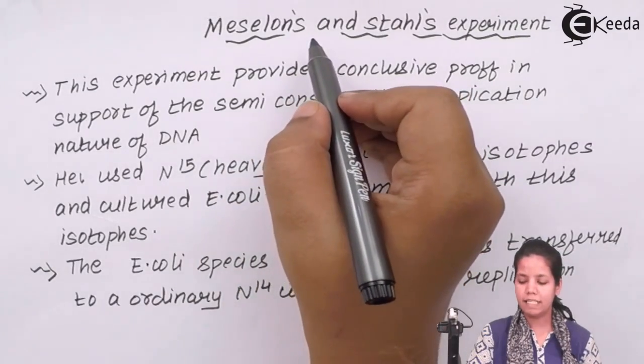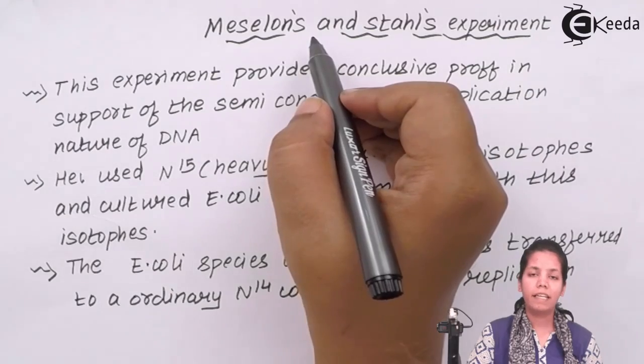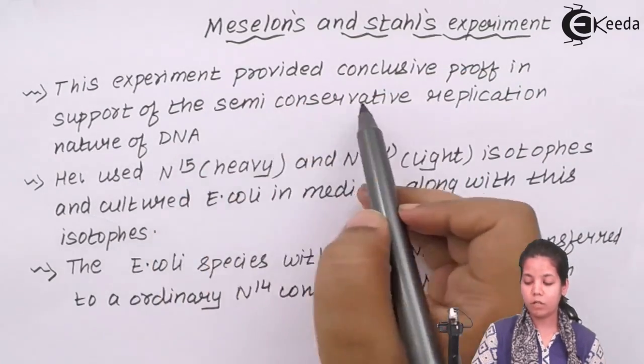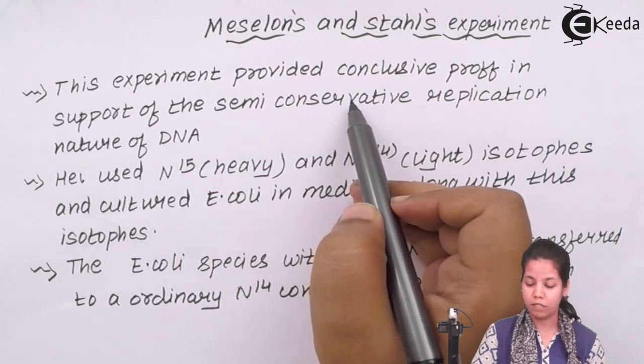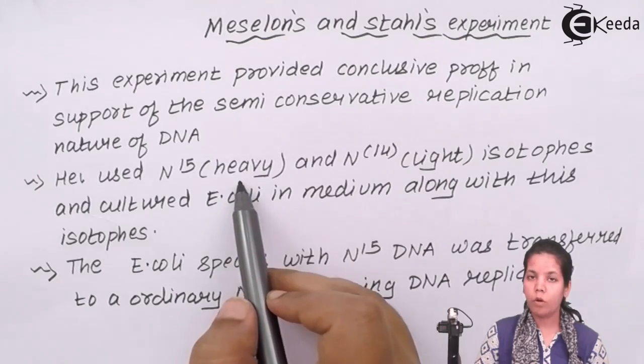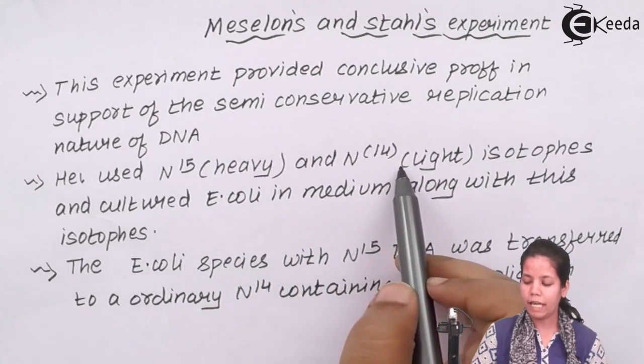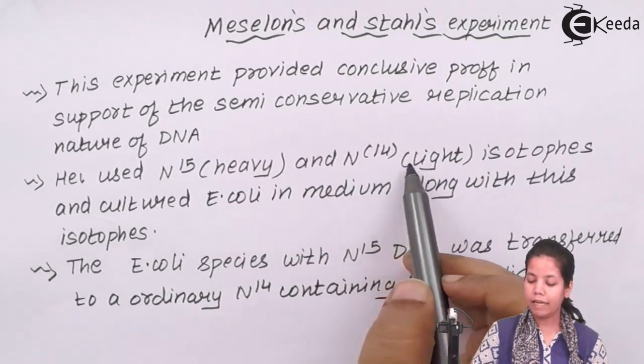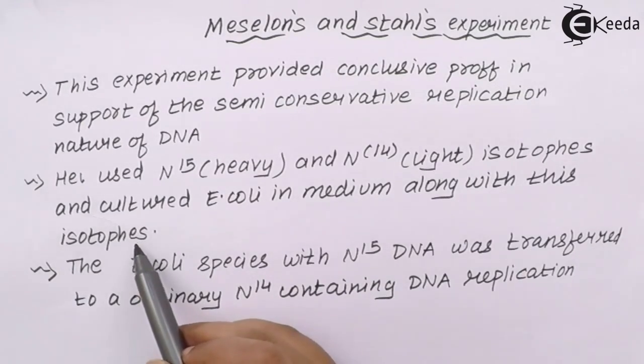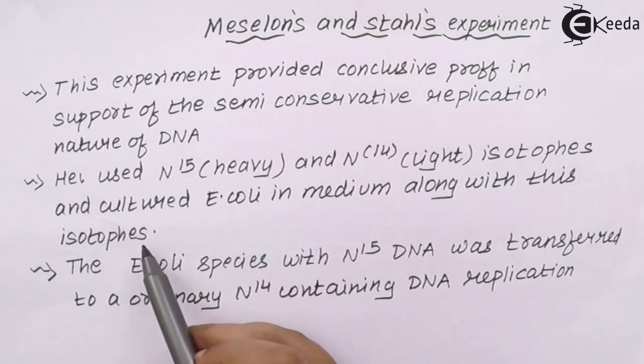During Meselson and Stahl's experiment, what they tried to prove is that DNA was semi-conservative. This experiment provided the conclusive proof that DNA was semi-conservative. He used an N15 heavy isotope of nitrogen and N14 light isotope of nitrogen and cultured with E. coli species in a media along with these isotopes and did successive studies for a few generations.